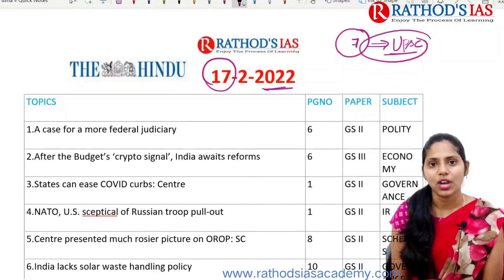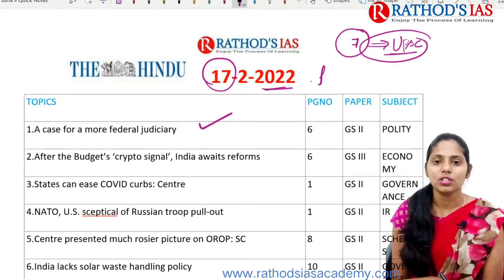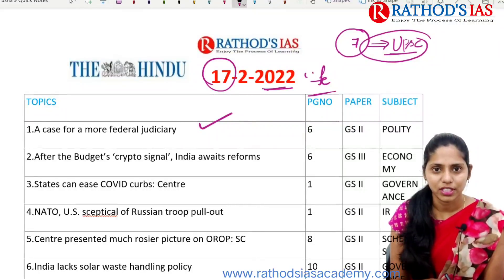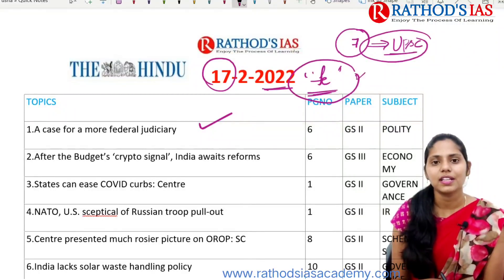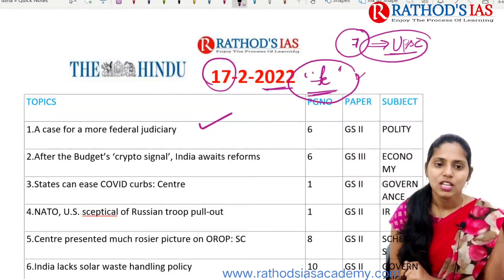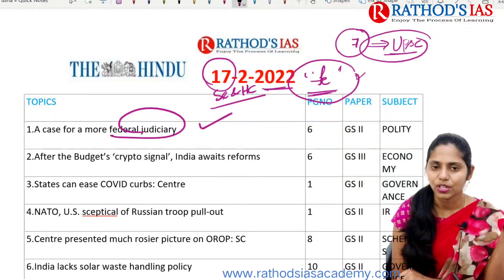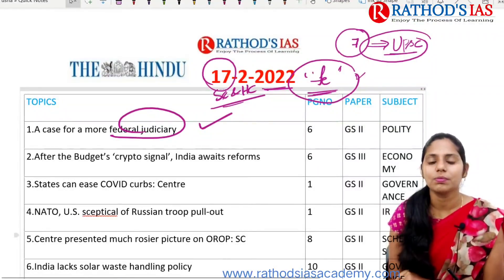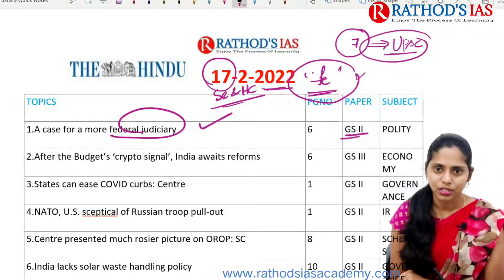The first topic is regarding federal judiciary. Federalism is nothing but a proper sharing of powers between center and state. Federal judiciary mainly talks about the Supreme Court and the High Court. This topic is very much important from your polity point of view, which mainly comes under GS Paper 2.